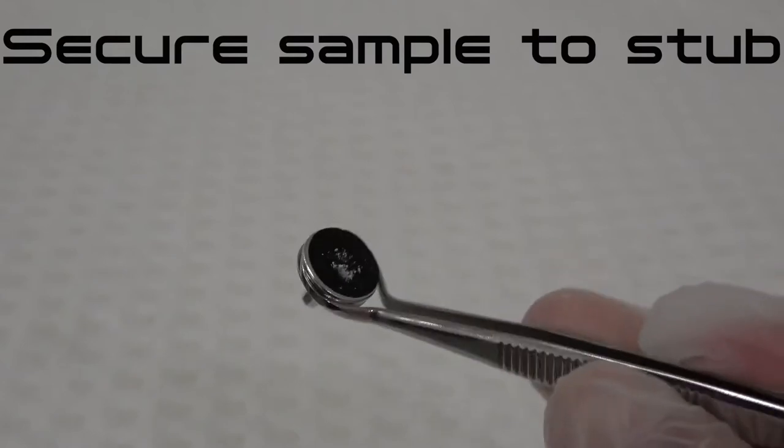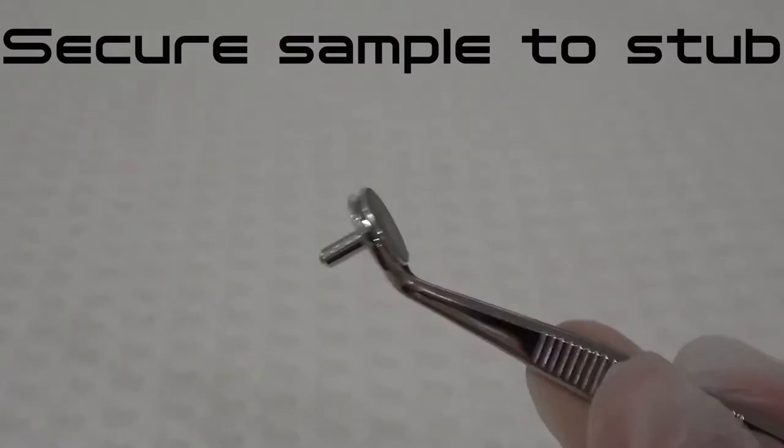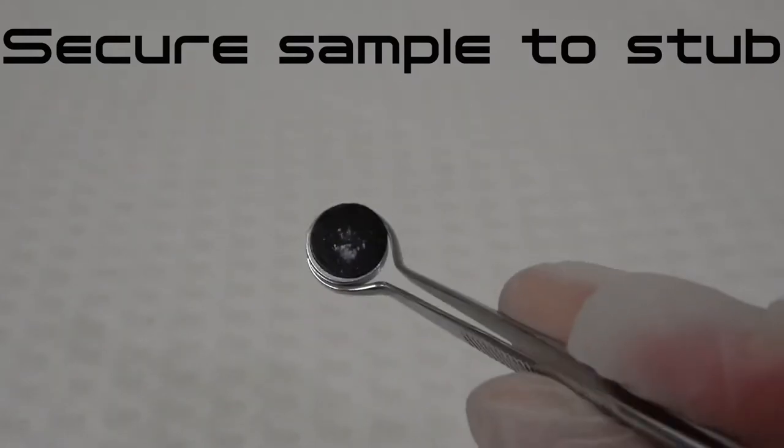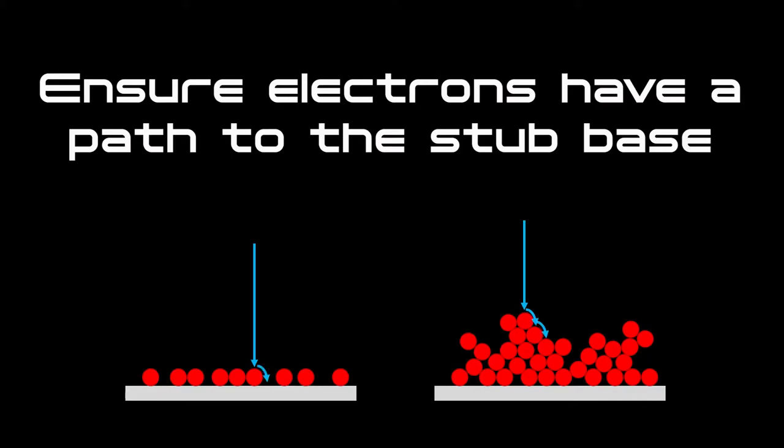When mounting powdered samples for SEM, our main goals are to secure the sample particles to the SEM stub so that they do not move during SEM examination, and to ensure the negative charge generated by the electron beam has a pathway away from the surface of the particles to the conductive adhesive and stub base.